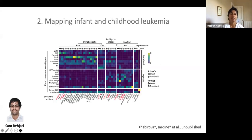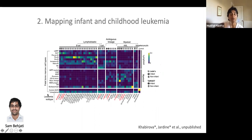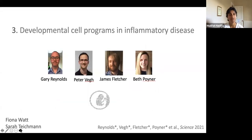The second utility of the reference dataset is mapping infant and childhood leukemias. B-cell lymphoblastic leukemia is extremely common in childhood, and we can now see what types of cell states these leukemic cells best correlate with, and work out what features we can target for therapy to help children with leukemia.